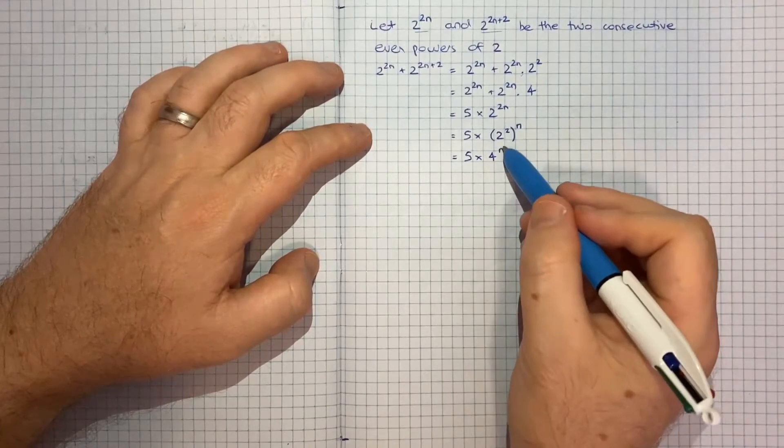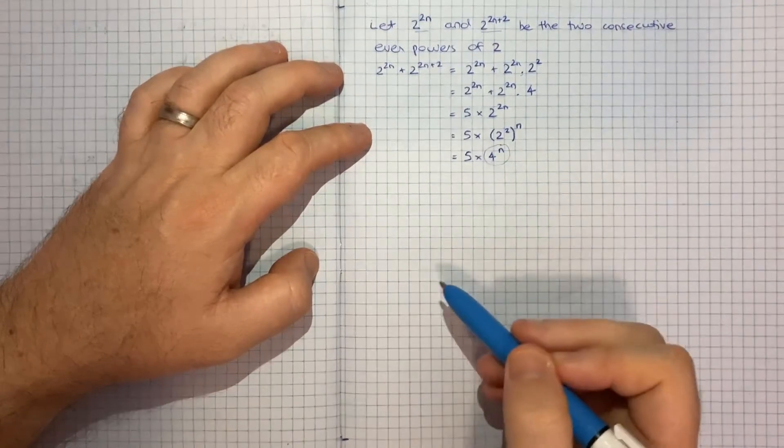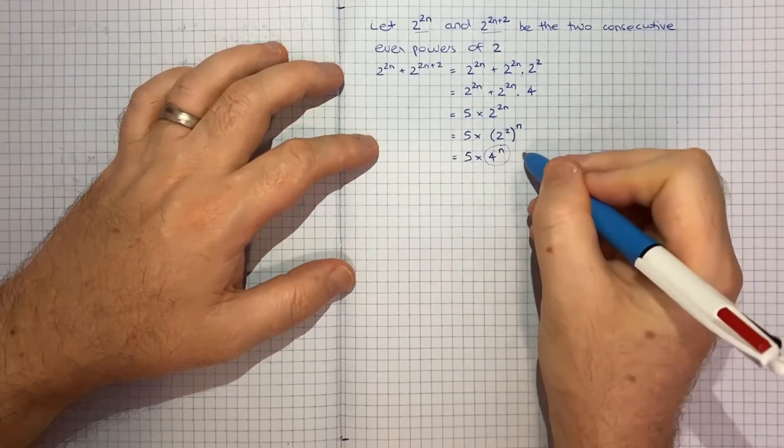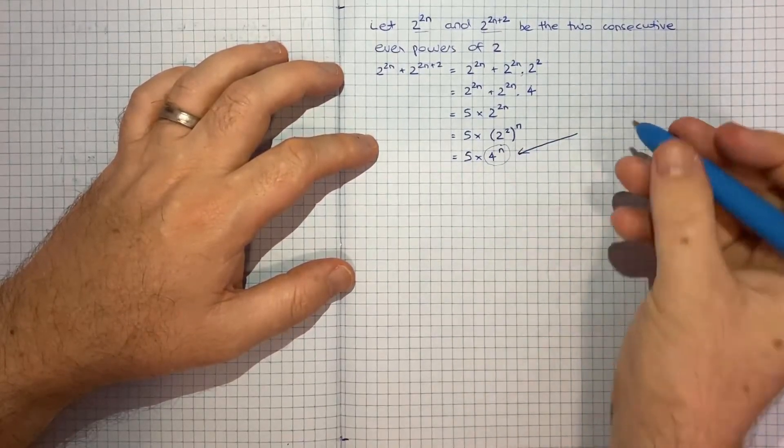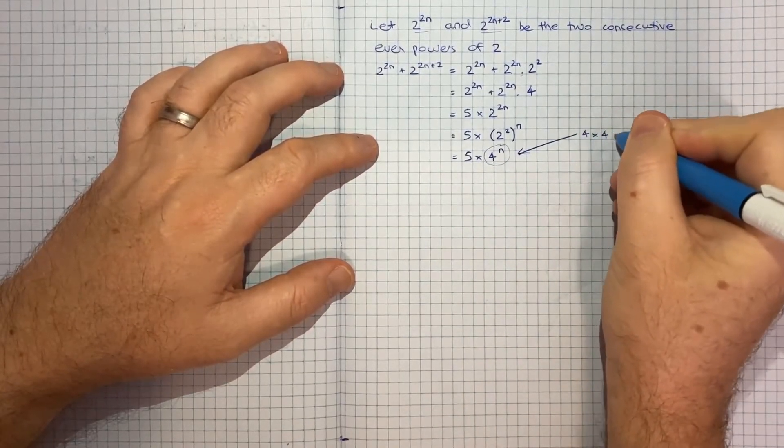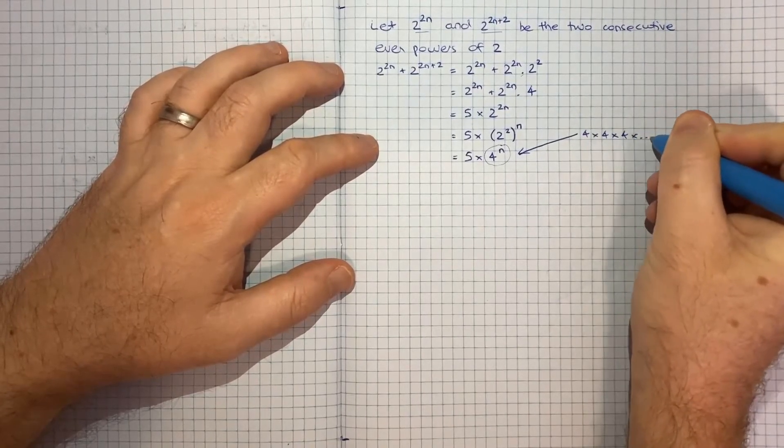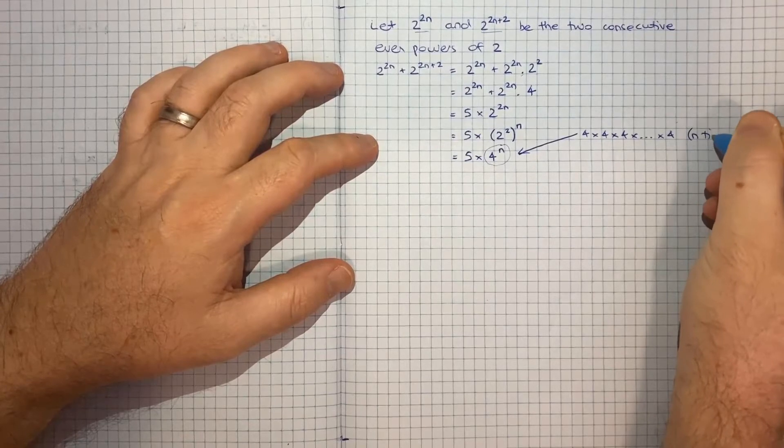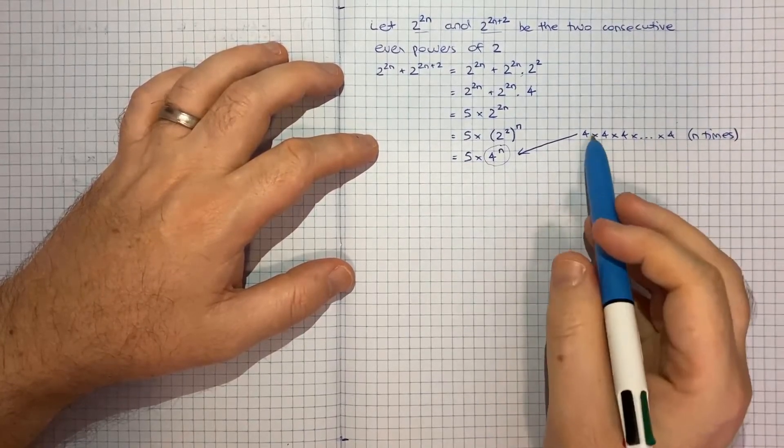And now the key is to think about well what does 4 to the power of n, what is that? And if we just go over here, 4 to the n is 4 times 4 times 4 times 4 and we're doing that n times. That's basically what 4 to the power of n is.